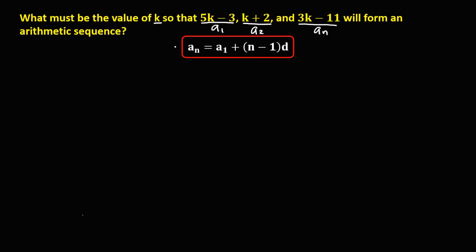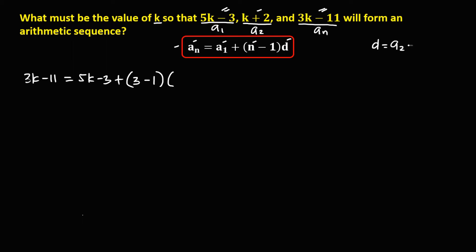To solve for the value of k using this formula, we have a sub n, that's 3k minus 11, equals a sub 1, which is 5k minus 3, plus n minus 1 times the common difference. Since we have 3 terms, n equals 3. The common difference is a sub 2 minus a sub 1, so that's k plus 2 minus 5k minus 3.